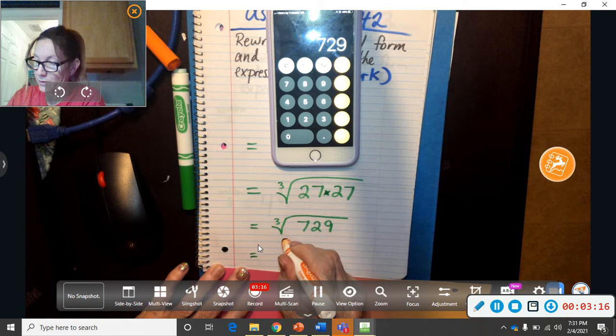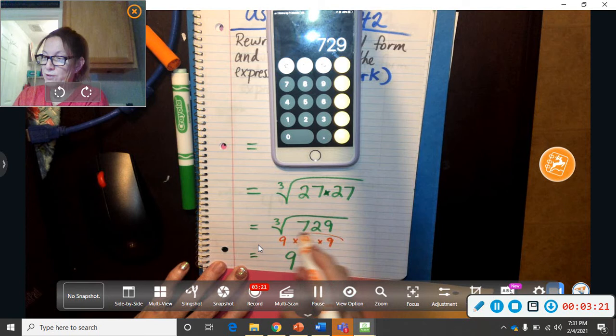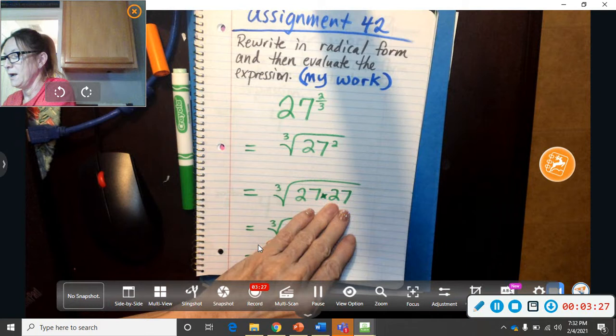So the answer to the whole thing, three numbers multiplied together. 9 times 9 times 9 equals 729. But that's not your answer. The answer is just the number 9.